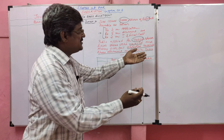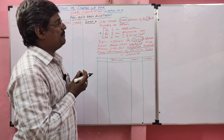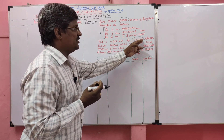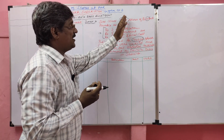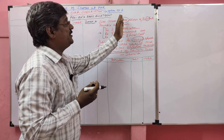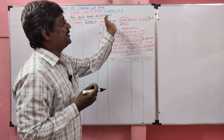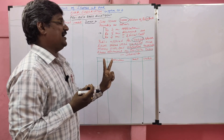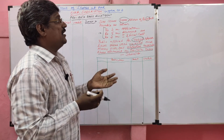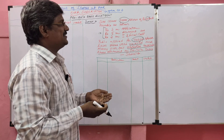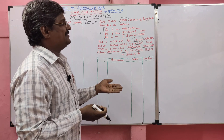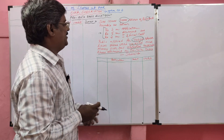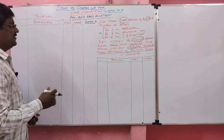So we received share applications for 70,000 shares. We can transfer 50,000 share application money to the capital. The remaining 20,000 excess shares should be adjusted in the share allotment. Let me solve the problem.